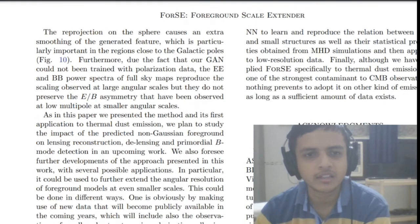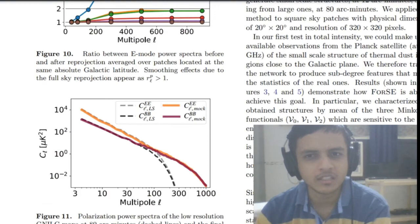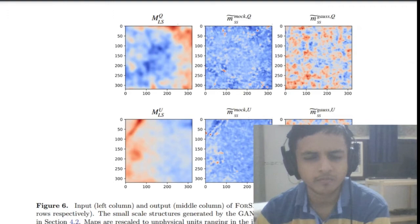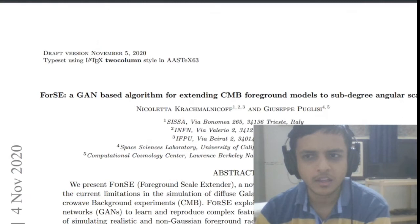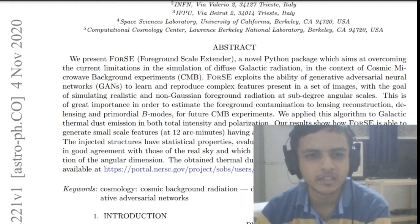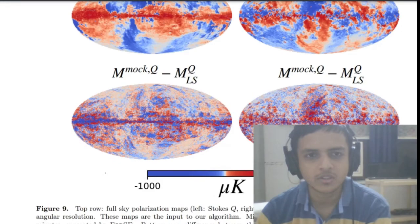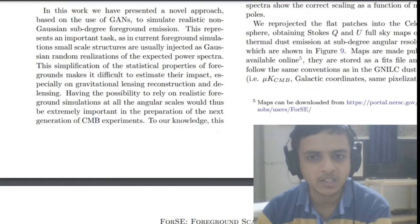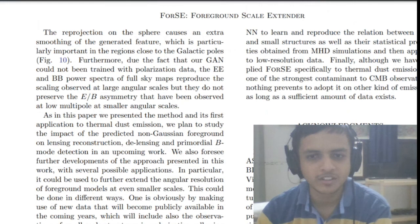Coming to the conclusion: the result they achieved was obtaining the thermal dust Stokes Q and U maps. They showed they are able to simulate realistic and non-Gaussian foreground radiations — that was the final result of this paper. I hope you got interested in this topic and will check out the algorithm. Stay tuned to Abirishi if you want to learn more about image processing, machine learning, astronomy, and astrophysics. Thank you for watching.